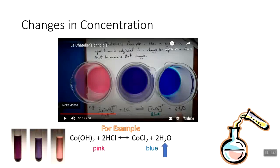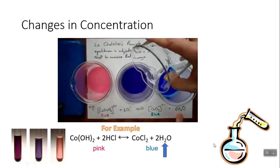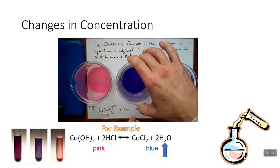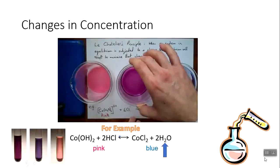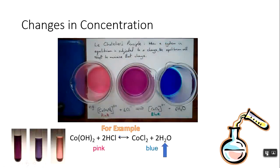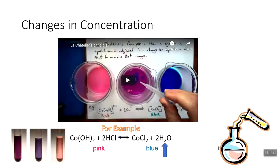Now if we add more water — which is a product — which way will equilibrium shift? There's too much product, so Le Chatelier says it will push everything to the left, and as the reaction goes backwards, it creates more reactants and turns pink. In the video, pouring in water straight away produces pink, and the solution goes back toward the purple color we started with. Our prediction was correct.